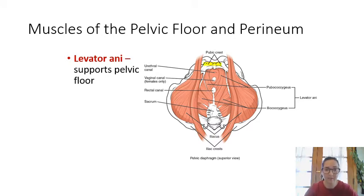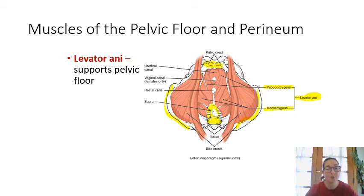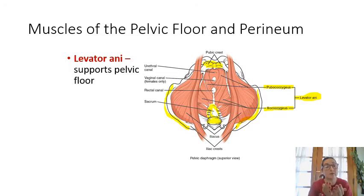Looking down at the pelvic floor, the two main muscles are the components of levator ani: pubococcygeus, which runs from the pubis bone to the coccyx, and iliococcygeus, which runs from the ilium to the coccyx. Together, these muscles form the pelvic floor, helping to hold all the pelvic organs in place.